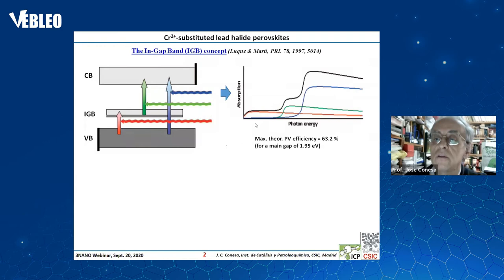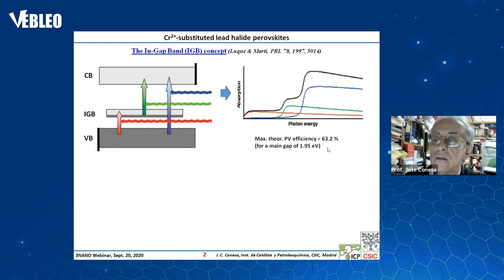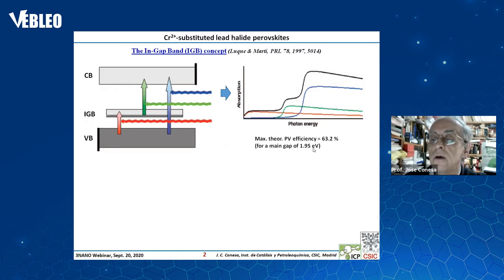In such a case, it is possible to extend the range of photons in which you can observe a transition, and what this work shows is that it is possible to attain a very large efficiency. The maximum theoretical photovoltaic efficiency is about 63% in case that the main gap — from valence band to conduction band — is about 1.95 electron volts.